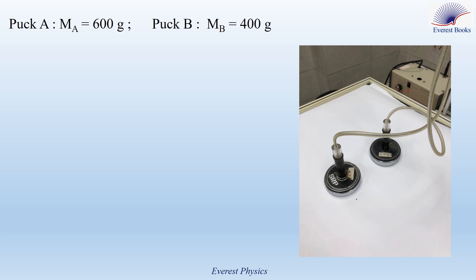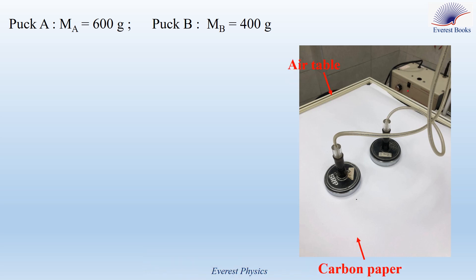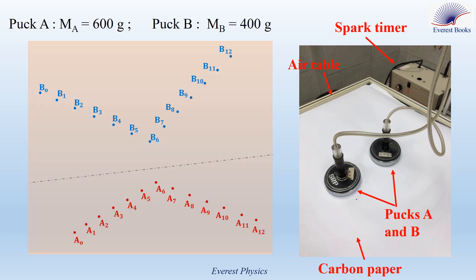Now let's explain the procedure of our experiment. First, place a carbon paper on the earth table. Second, set the spark timer at 20 milliseconds. Third, we turn on the spark timer and then we push the two pucks on the earth table toward each other with concurrent velocities. The moving pucks leave a trace of black dots showing their actual paths.